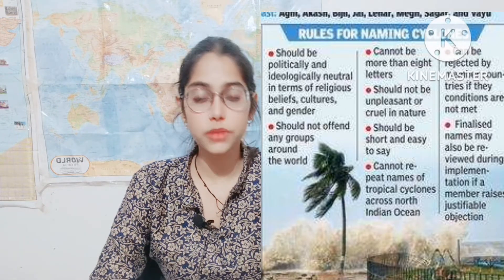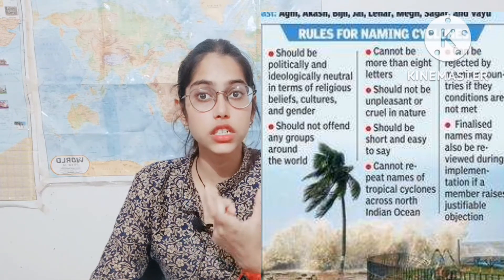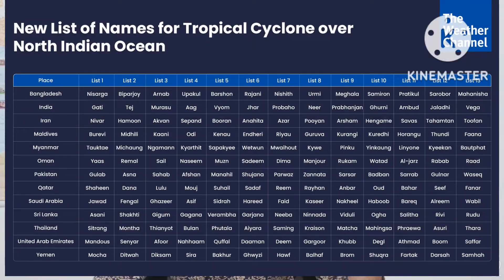In 2004, eight countries of the Indian Ocean agreed to have a common naming system for cyclones in the Indian Ocean. Each country provides a list of names arranged in alphabetical order in a matrix form. These suggested names should be neutral — politically, culturally, and in religious context — and should not affect any gender negatively. Names should be no more than eight letters, and if any country raises an objection, the name should be removed. This matrix expired in 2019, and a new matrix with 13 countries was introduced.